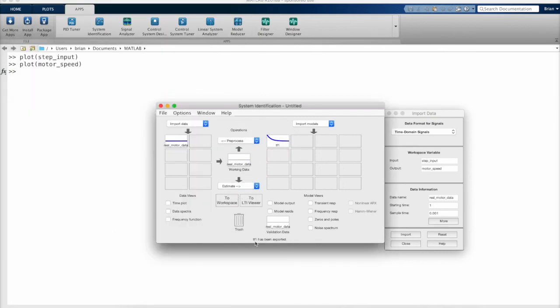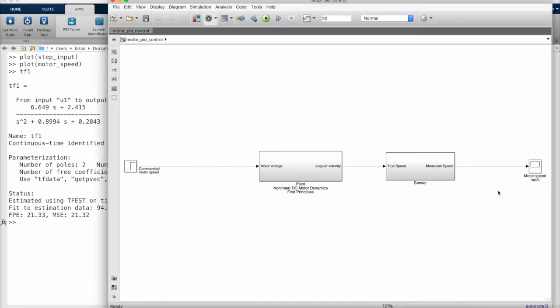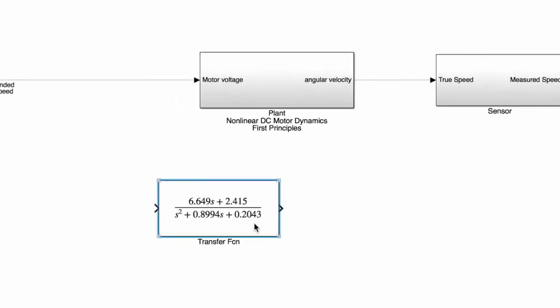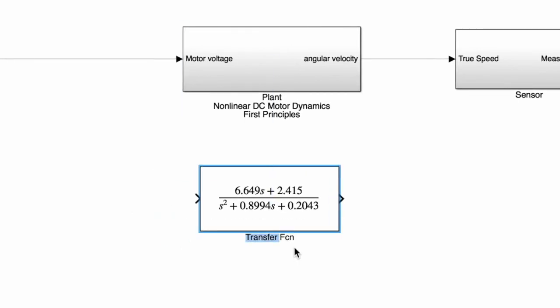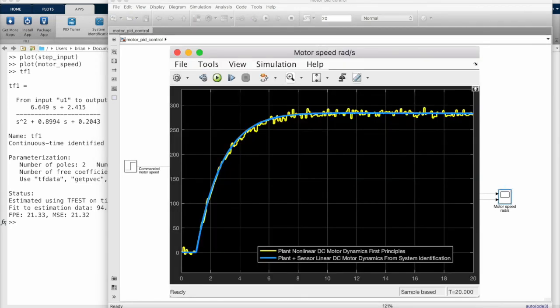From my input and output data, the system identification app came back with a second order transfer function. And now we can go back to Simulink and put our new identified linear model to the test. I'll add a transfer function block and write out the numerator and denominator explicitly. You could use the LTI block and just assign it to TF1 directly, but I like writing it out explicitly in video so that you can see the transfer function clearly in the block mask. As a reminder, this block represents a linear model of both the DC motor plant and the sensor. And we got this model using only an input and response signal from our system. Now we can run both of them side by side and see that our estimated linear model matches our non-linear model pretty nicely.